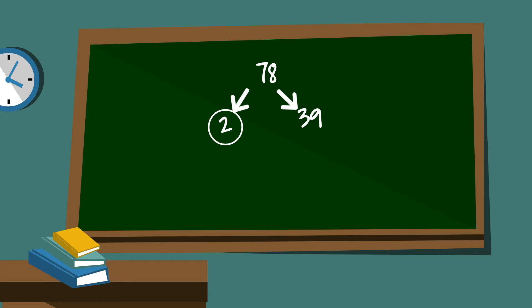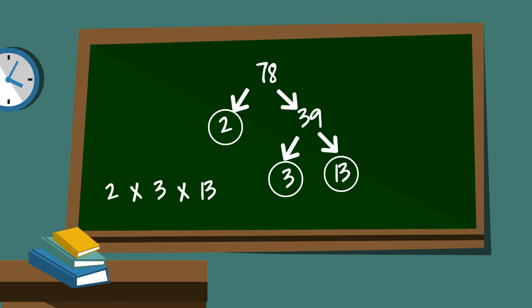Next, I know that 3 will go into 39. So 3 times 13 is 39. I will circle both of these because they are prime. So at this point I have all prime numbers, so the prime factorization of 78 is 2 times 3 times 13.